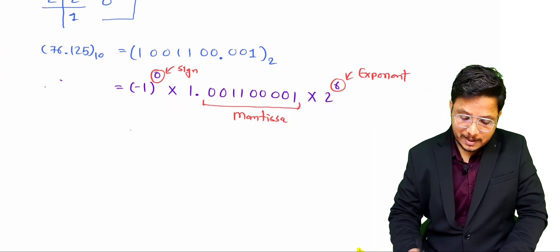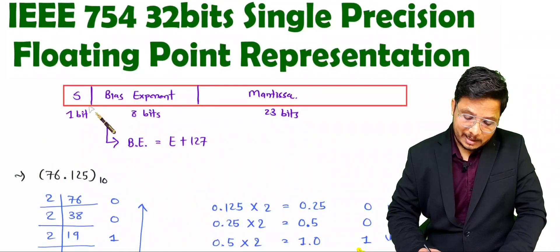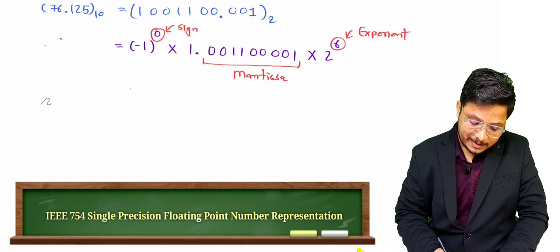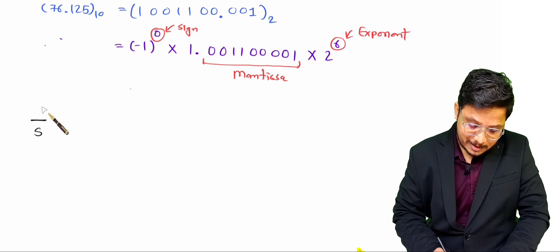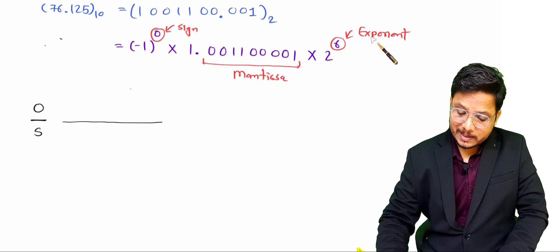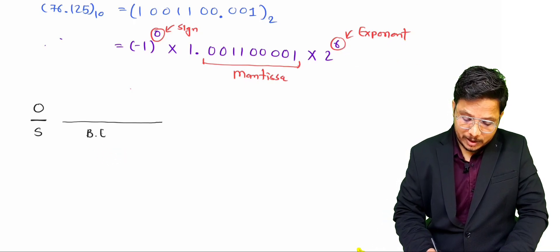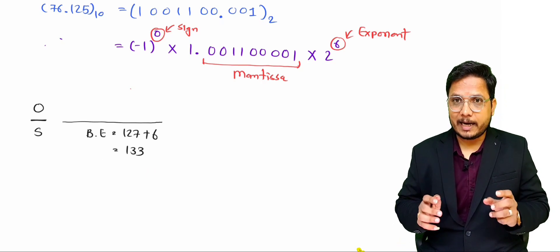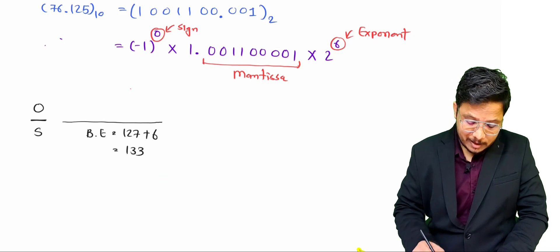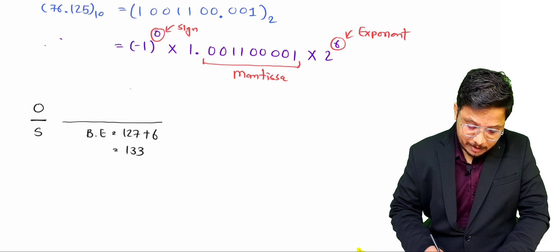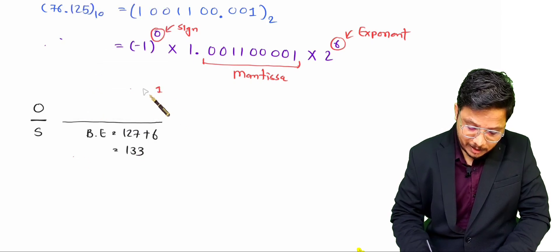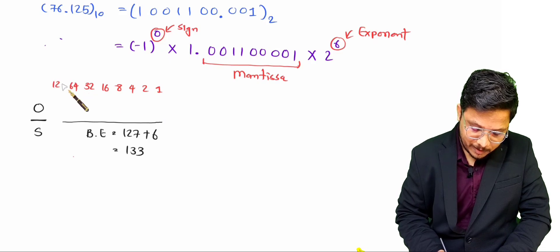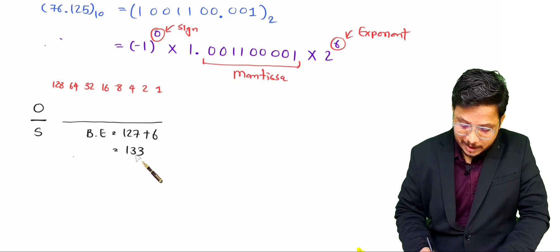We can now represent this in IEEE 754 single precision format. The first bit is the sign bit, which is 0. Next is the bias exponent: exponent is 6, so bias exponent = 127 + 6 = 133. We represent 133 in 8 bits using powers of 2: 128, 64, 32, 16, 8, 4, 2, 1.